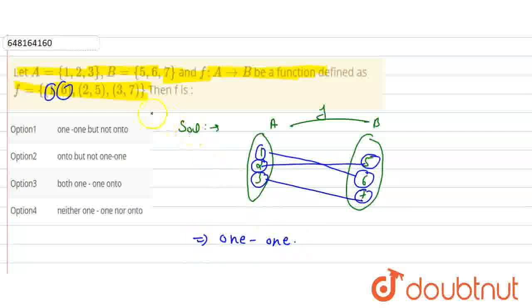Now, for onto, every element of set B should not be vacant - it should have a pre-image. If we look at this, the pre-image of 5 is 2, the pre-image of 6 is 1, and the pre-image of 7 is 3. It means it will be onto.